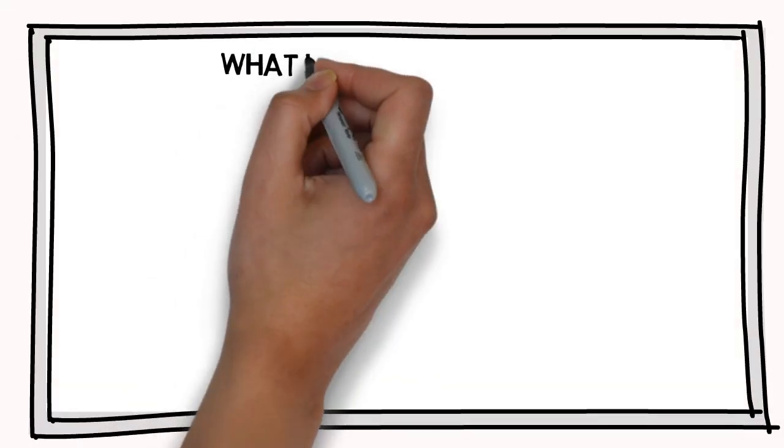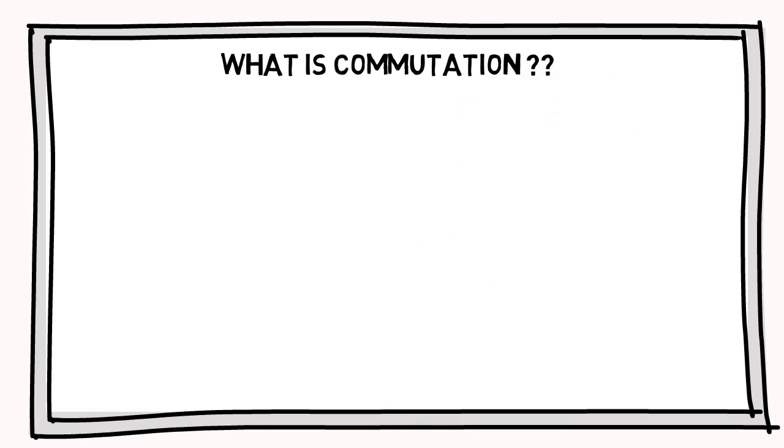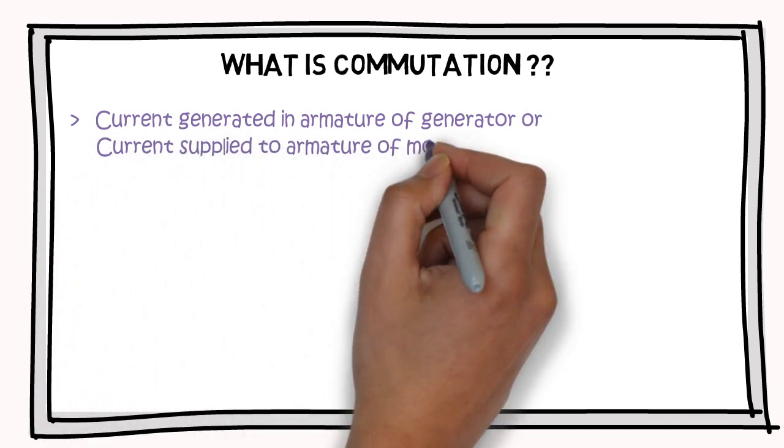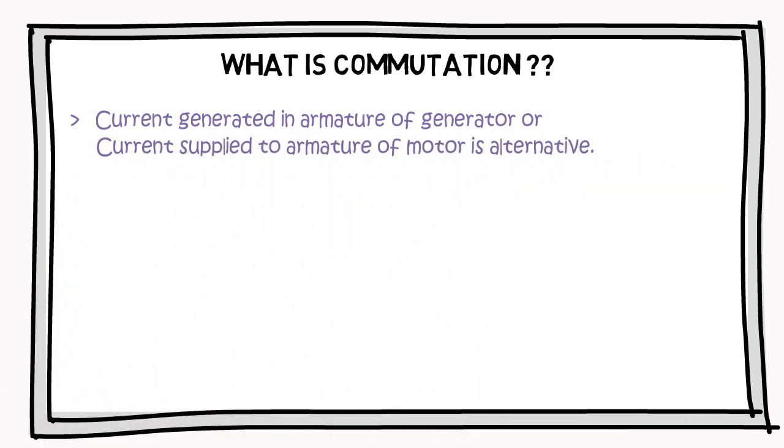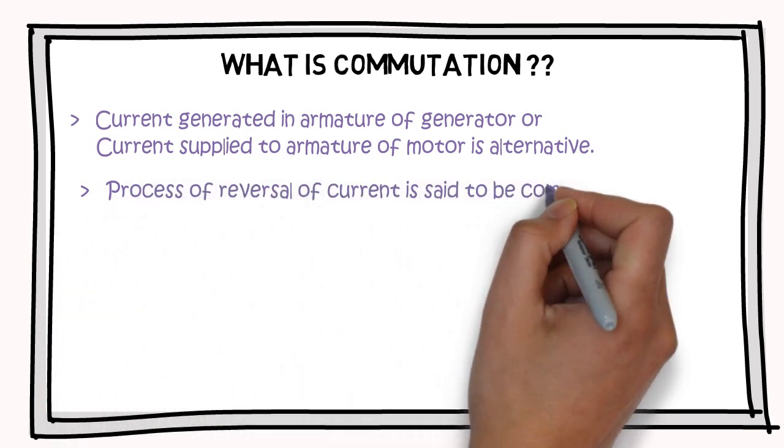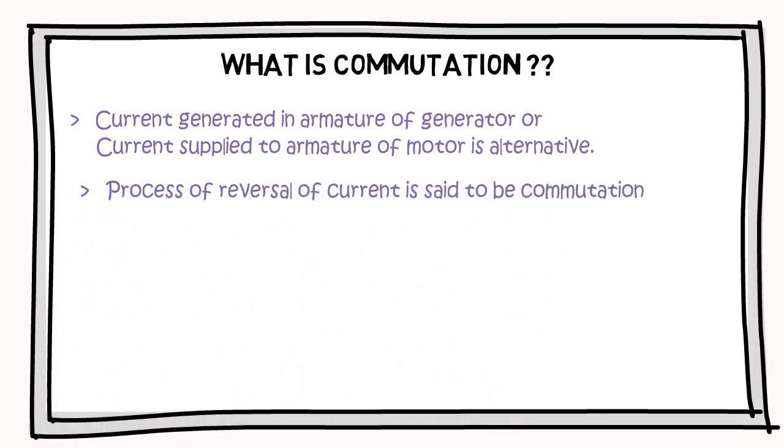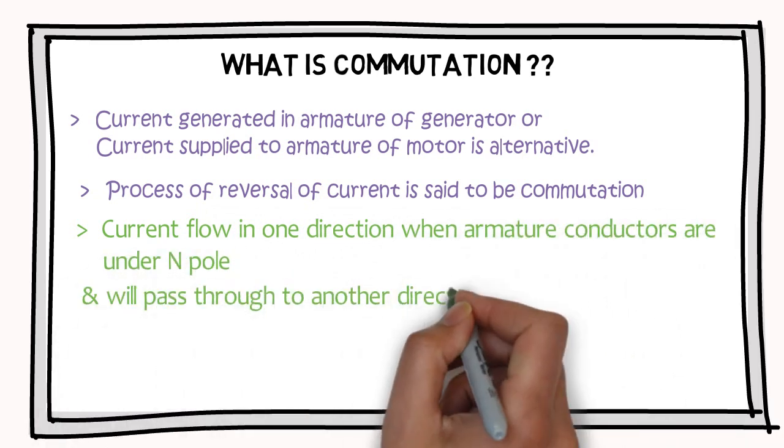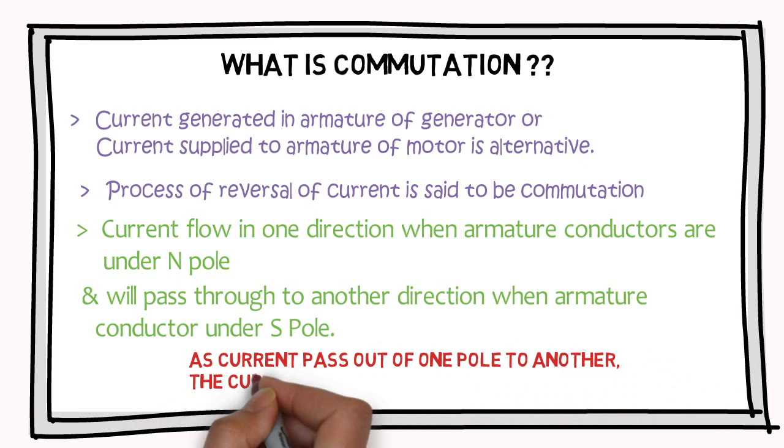Firstly, we will see what is commutation. As we know, current generated in armature of generator and current required in armature of motor is alternating in nature. However, in DC machine, current tendency is unidirectional. So this process of reversal of current is said to be commutation. We can simply say that as the pole will change, direction of current will get reversed.